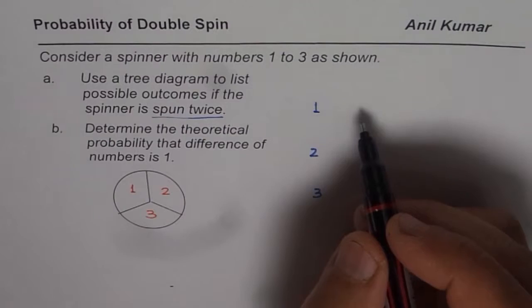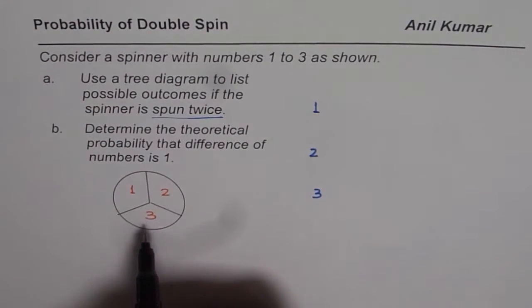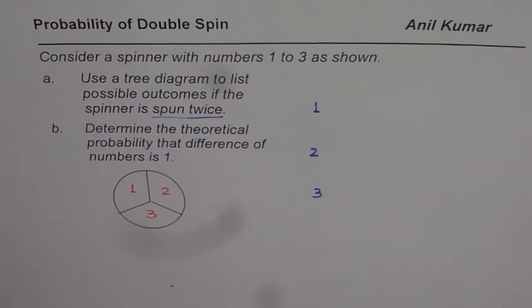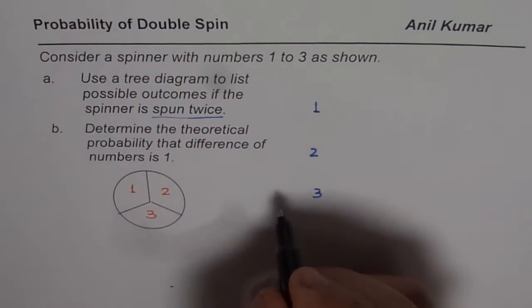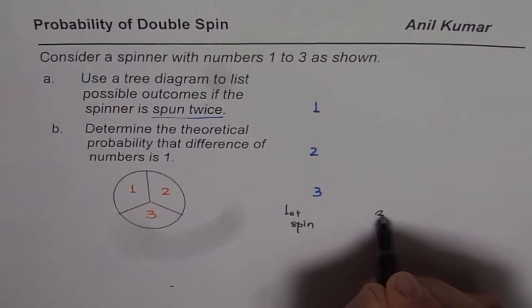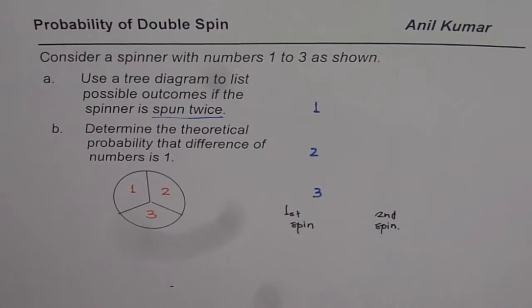So in that case, if I have to show it on a tree diagram, how do I show it? So this is the first spin. This is my first spin. Now second spin, what are the chances?